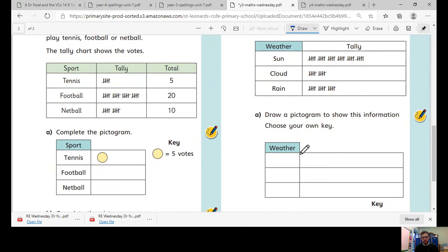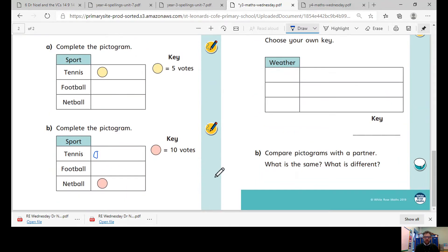And using that knowledge, you want to complete this one. You've got to create your own pictogram down here to present this data. The last bit you won't be able to do, but if you send it on Class Dojo, I'll be able to look and I can suggest any changes if you need to.